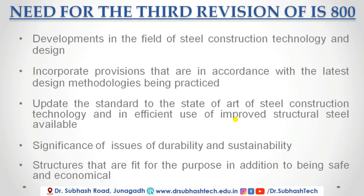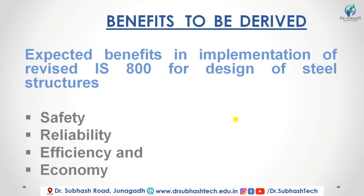The benefits expected from implementation of the revised IS 800 for design of steel structures include four main parameters: first and foremost safety, second reliability, third efficiency, and fourth and most important economy. In the older version, steel structures were designed very heavily and were therefore not economical. But due to the changes of the third revision, our steel structure design should be economical — that will be seen in our next lecture series also.